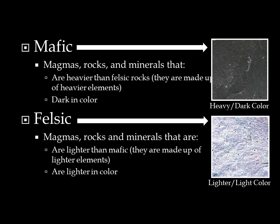Let's move on to the definition of and the difference between mafic versus felsic. Mafic refers to magmas, rocks, and minerals that are heavier in weight and darker in color than felsic magmas, rocks, and minerals. Mafic magmas, rocks, and minerals are heavier in weight because they are made up of heavier, darker colored elements.